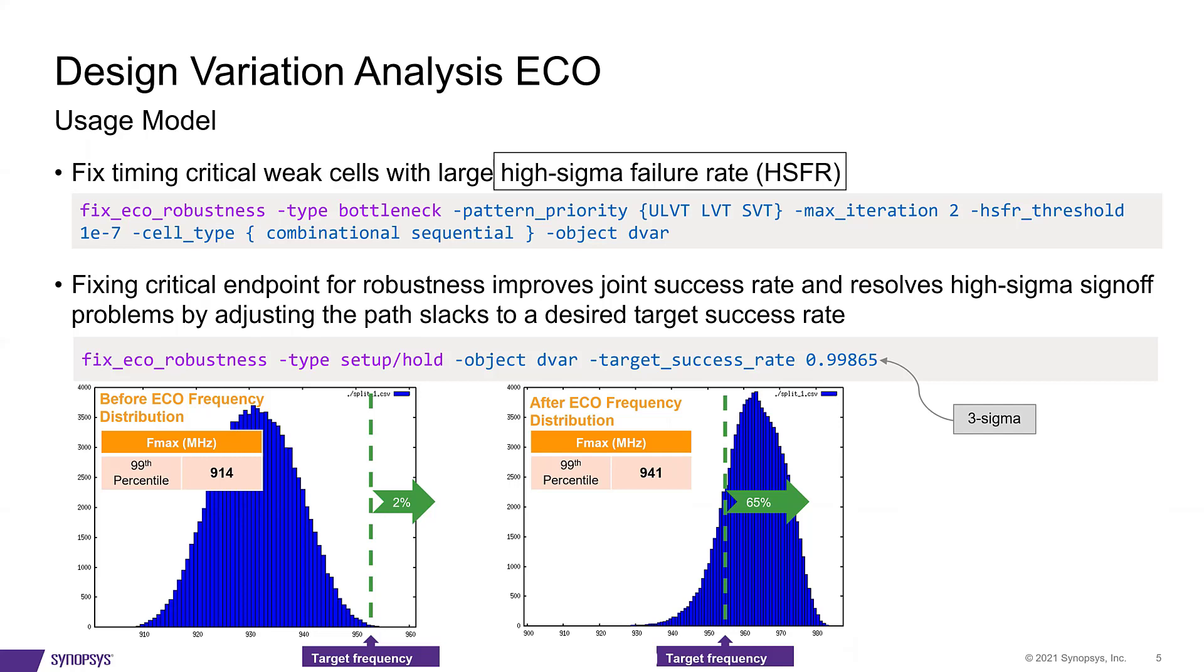Followed by LVT, and then by SVT. The PrimeShield ECO also performs cell sizing. Both cell sizing and VT swap can be used concurrently or even separately.